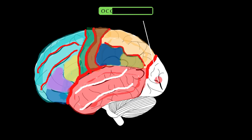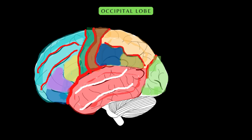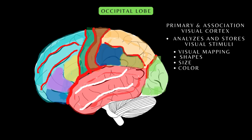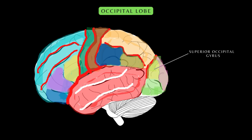The occipital lobe, located at the back of the cerebrum, contains the primary and association visual cortex. It is responsible for the processing and integration of visual stimuli — it analyzes, recognizes, and stores the memory of visual input. It is divided into three gyri: the superior gyrus, the lateral gyrus, and the inferior gyrus.